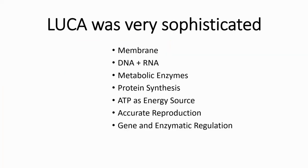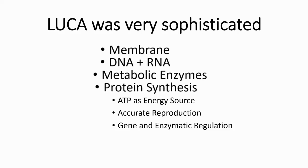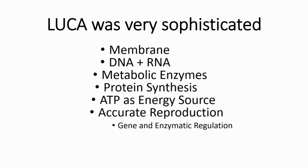Let's talk about LUCA a little bit more. LUCA was a very sophisticated cell. It had a membrane, DNA and RNA, metabolic enzymes, protein synthesis, it was able to make proteins, it was able to use ATP as the energy source, it had a very accurate reproductive system, and it had very complex and elaborate gene and enzymatic regulation.